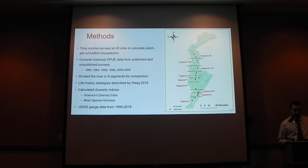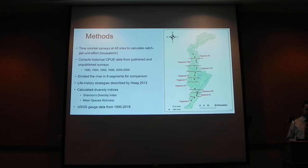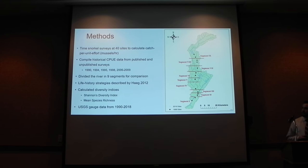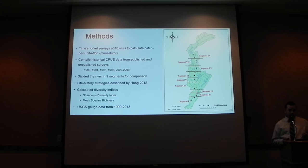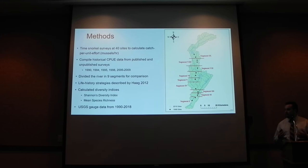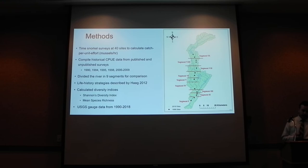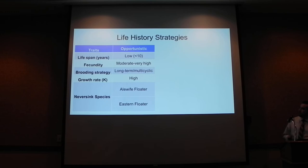For our methods, we used timed historical surveys at 40 sites to calculate a catch-per-unit effort — the number of mussels per hour. We also compiled historical data from throughout the 1990s and mid-2000s, both unpublished and published surveys. To compare sites that didn't exactly align, we used a segment-based approach, averaging sites within a segment and comparing them over time. We also calculated basic diversity indices like Shannon's diversity index and species richness, and compiled USGS hydrological data from a number of gauges.